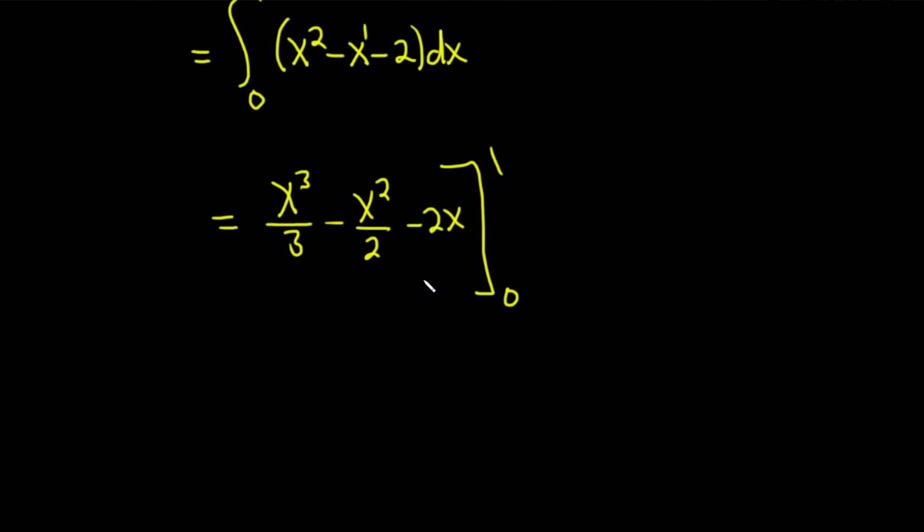And as before, you plug in the top number first. So this is going to be equal to... plugging in the top number. 1³ is 1. So we get 1/3. Minus 1² is 1. So we get 1/2. Minus. And then 2 times 1 is just 2. Minus. And then when you plug in 0 for all the rest of it, you're going to get 0/3. 0³/3 minus 0²/2 minus 2 times 0. So all of this is going to be 0. So that just goes away.